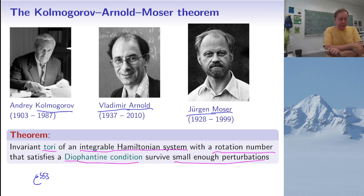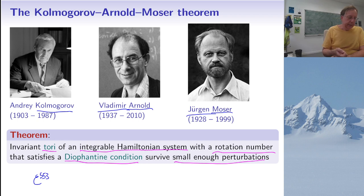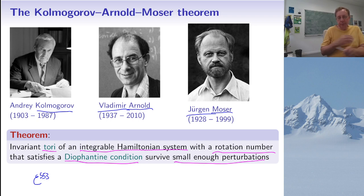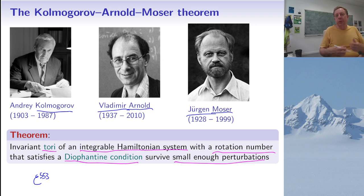All these proofs use the idea of solving the equation for u and v by iterations with Newton's method. One difficulty is that when solving this equation using Fourier series, you tend to lose derivatives — given bounds on derivatives of g, you can bound v but with fewer derivatives. One idea of Moser was to use approximation arguments to make g more regular without losing too much precision.